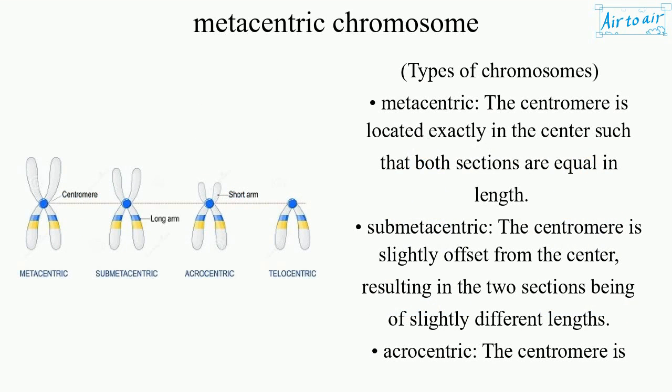Types of chromosomes. Metacentric: the centromere is located exactly in the center such that both sections are equal in length. Submetacentric: the centromere is slightly offset from the center, resulting in the two sections being of slightly different lengths.